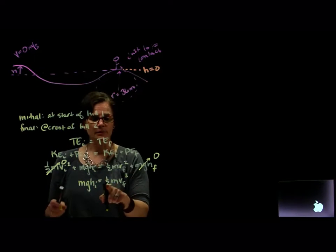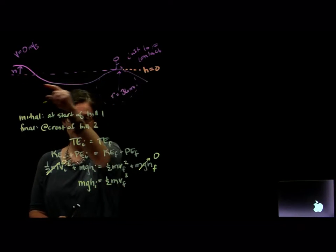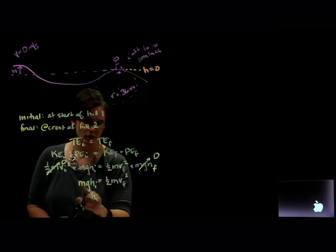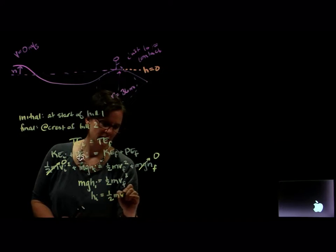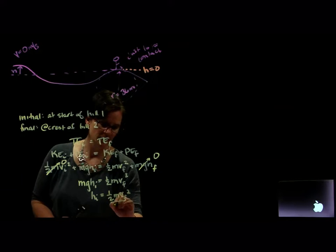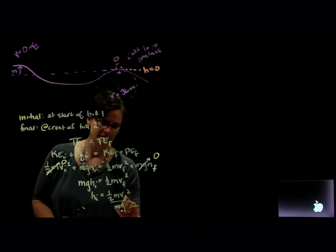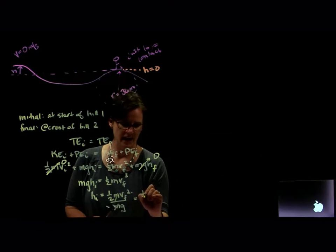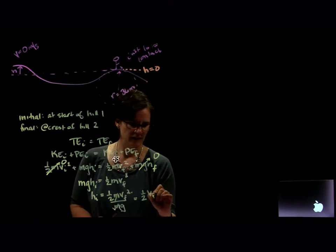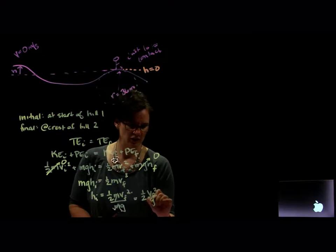All right, well let's simplify. We're interested in that height, that initial height. So if I divide both sides by mg, I end up with one half m times the final speed squared divided by mg. My m's will cancel out, and I'm left with one half v final squared over g.